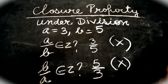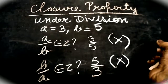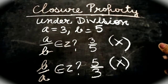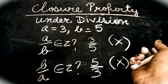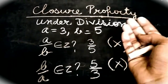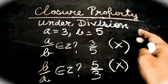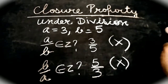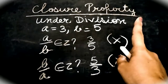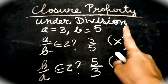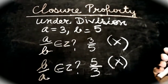So closure property does not hold under division, but it does hold under addition, subtraction and multiplication. To recap: closure property means that if I add two integers the sum should be an integer, if I subtract two integers the answer should be an integer, if I multiply two integers the answer should be an integer. In those cases the answer was always an integer. But when checked under division, the answer was not an integer. So closure property does not hold for division for integers.